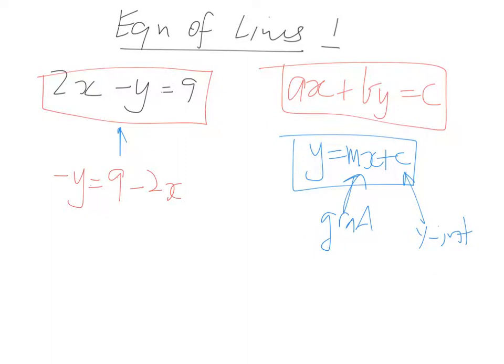And then, because we've got negative y here, we want positive y in that form. So we're going to multiply everything by -1. So y becomes -9 + 2x.